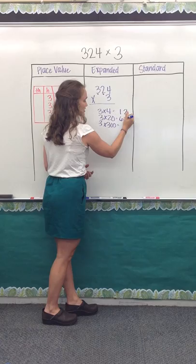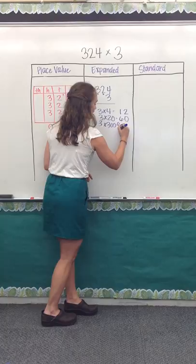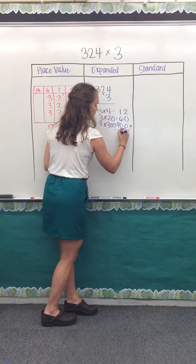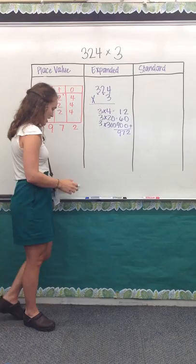So 3 times 20 is 60, and then 3 times 300 is 900, and then all they have to do is add them up. 972 and 972.